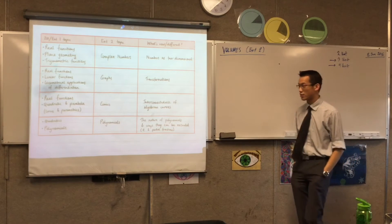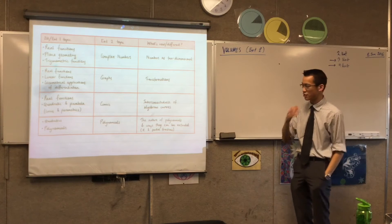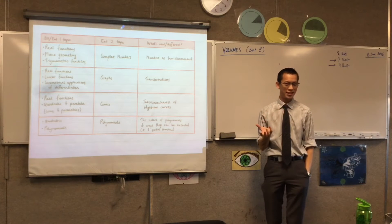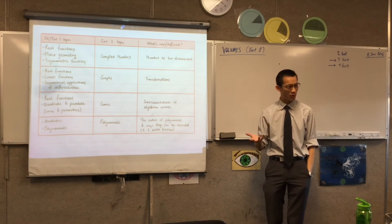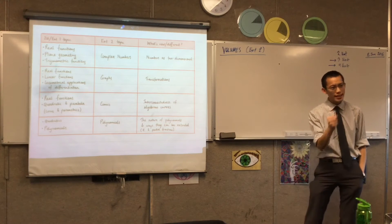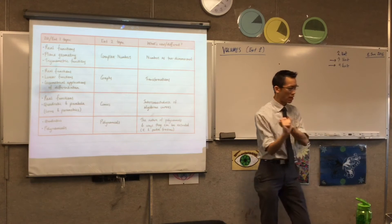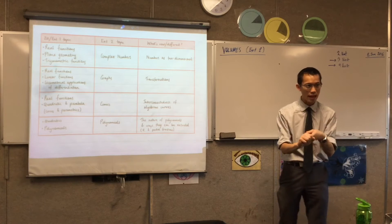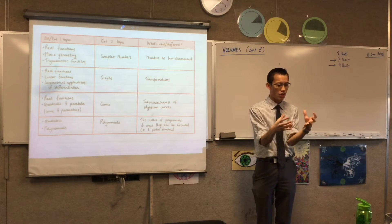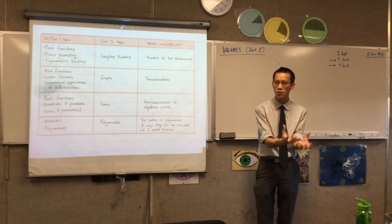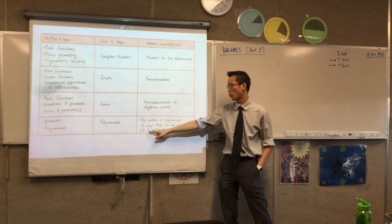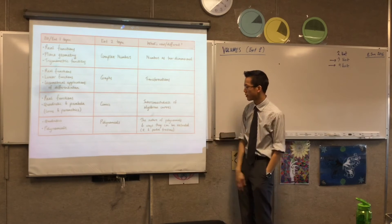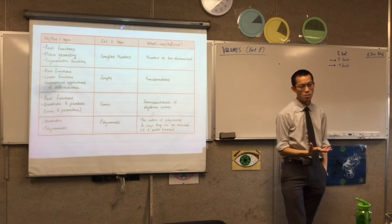The second-last Extension 2 topic we did was polynomials, which unsurprisingly leads on from the Extension 1 topic also called polynomials. But what we dug into - the fundamental theorem of algebra, and therefore multiplicity of roots - was digging deeper into what a polynomial is. Then, now that we know what complex numbers are, we could deal with polynomials in the complex field. We also looked at partial fractions, which came out of polynomial identities.